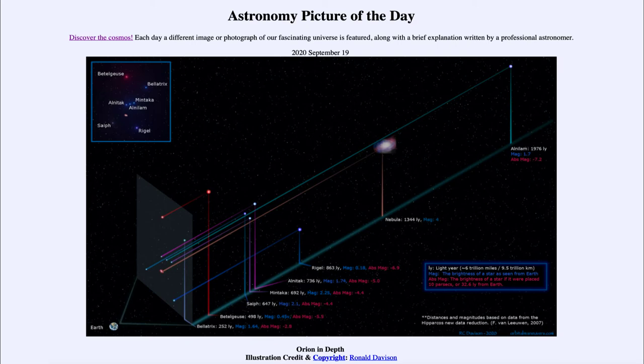And in magnitudes, the smaller the number, the brighter the object. An absolute magnitude is the intrinsic measure of the brightness of a star, how bright that star truly is.